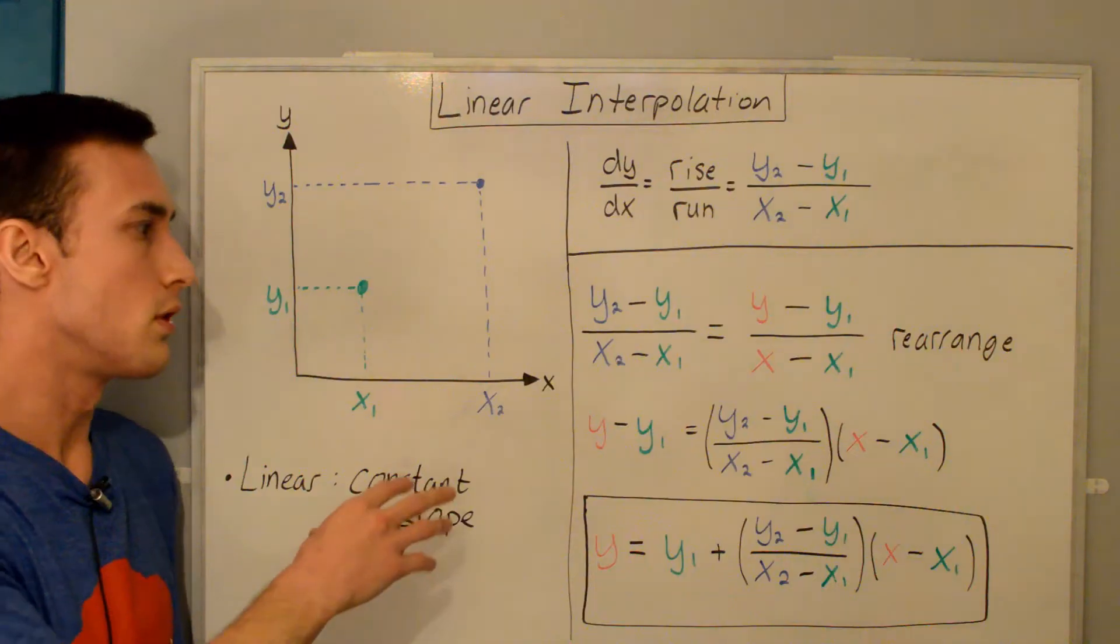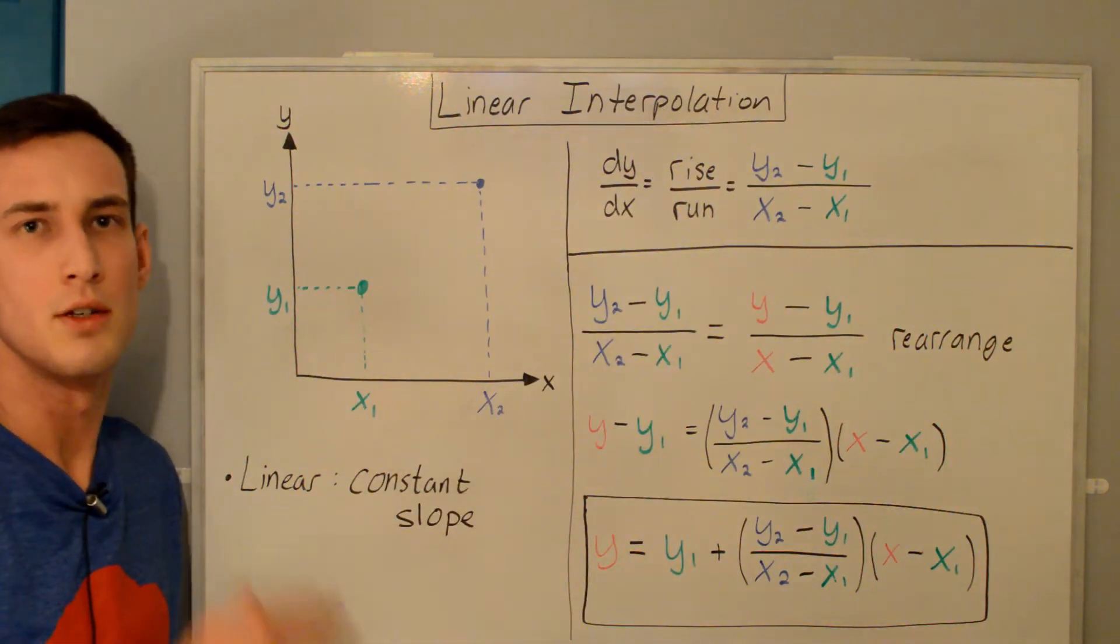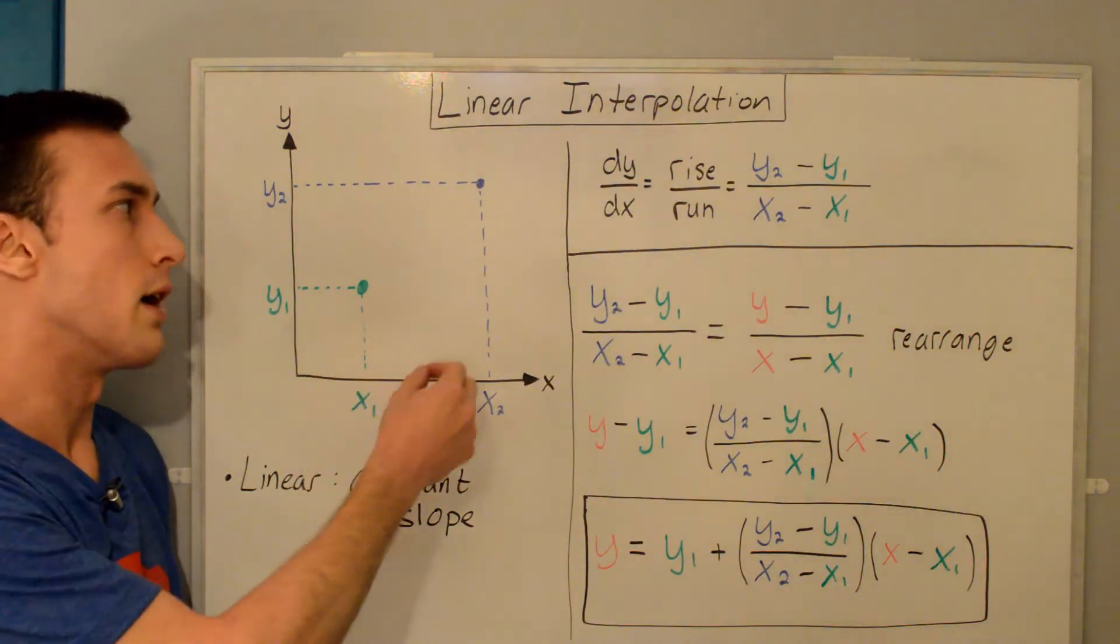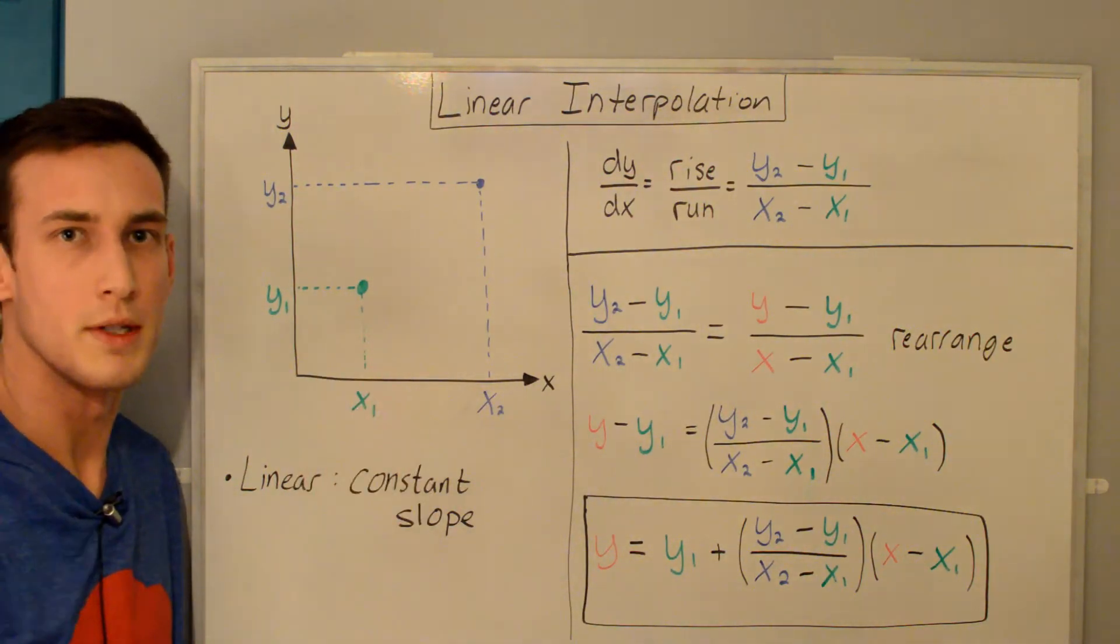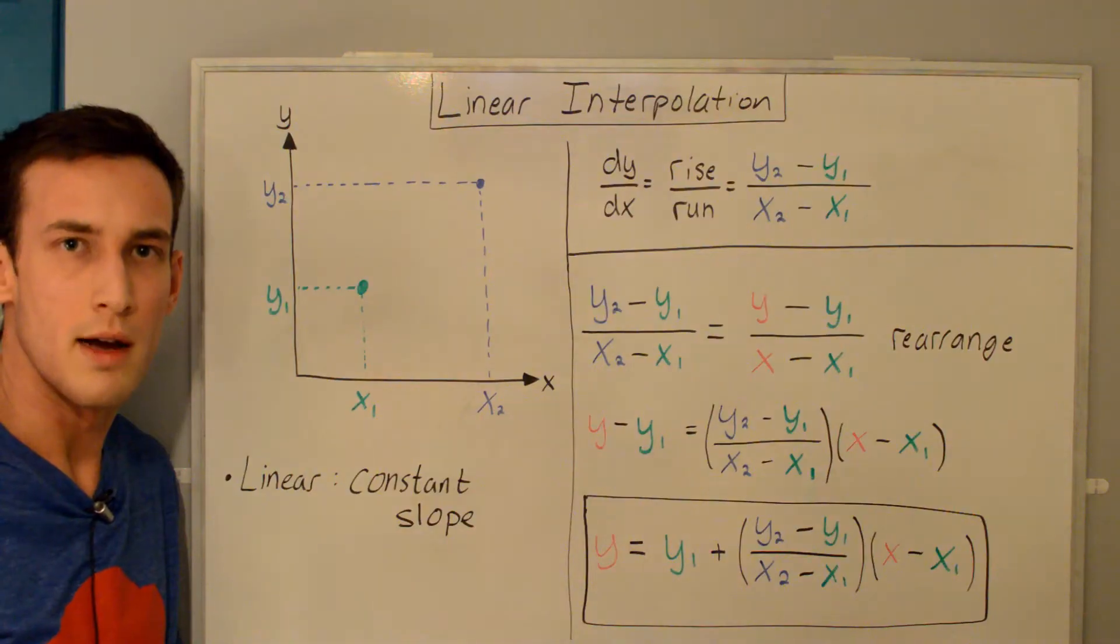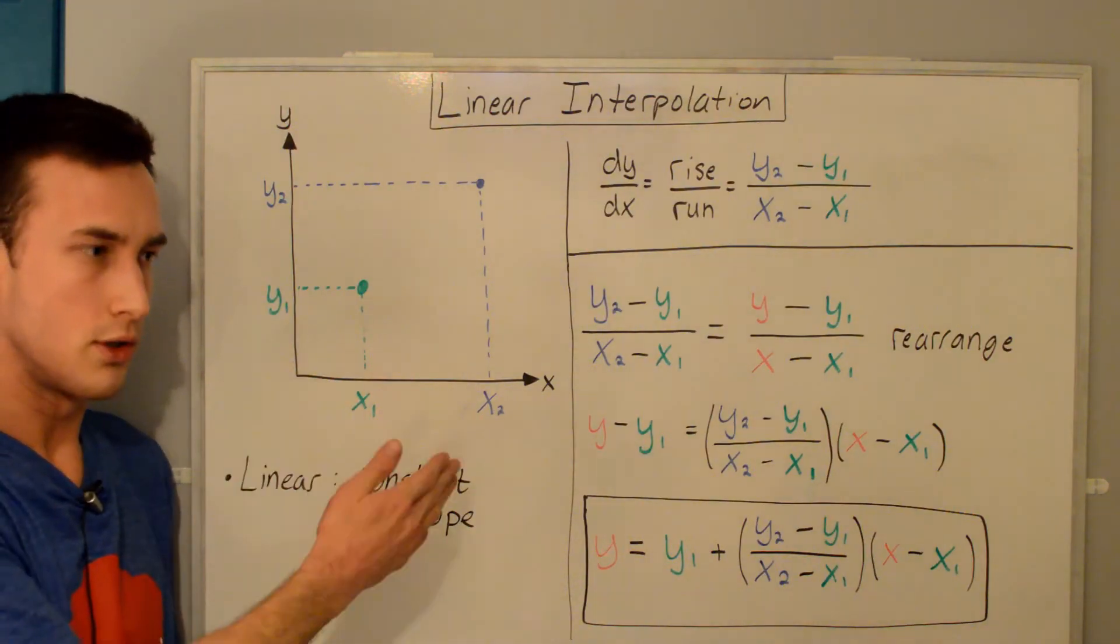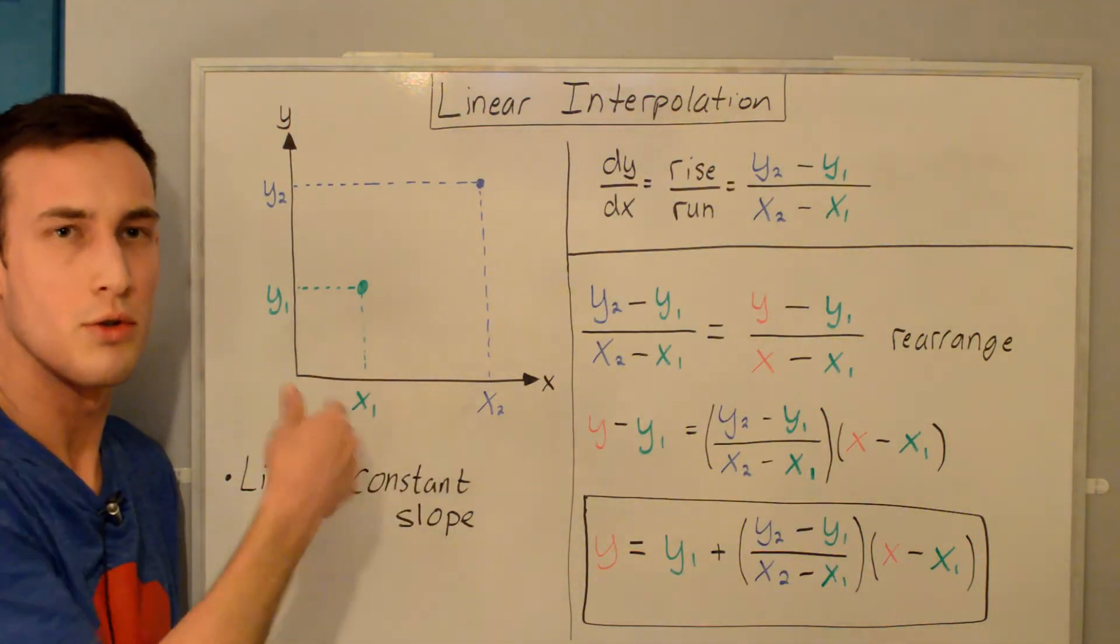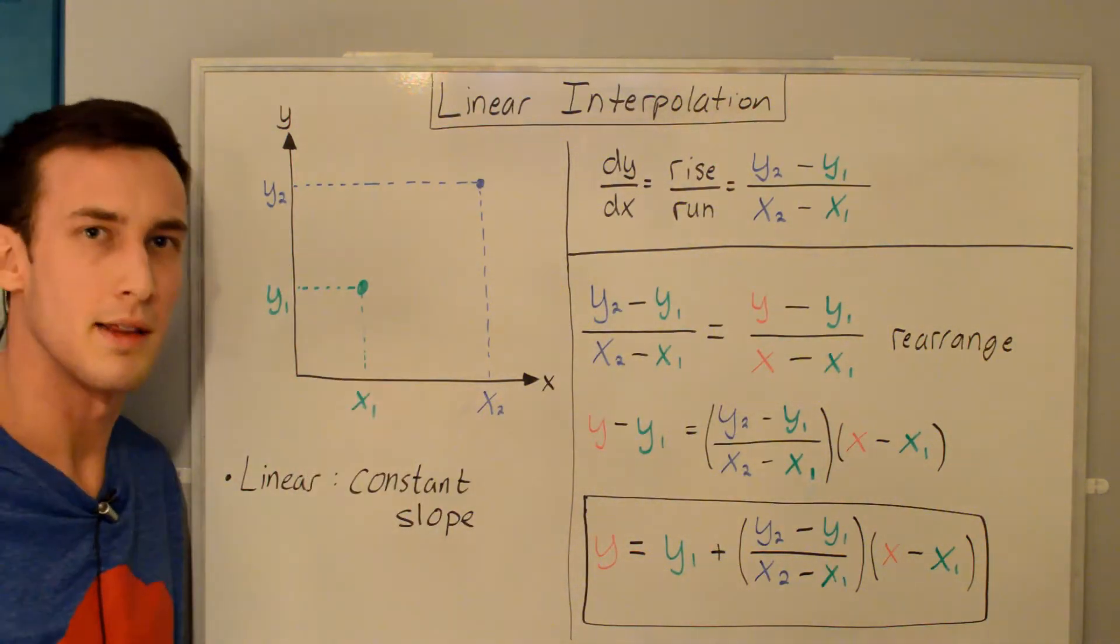This is a useful equation to use when you have values of data at discrete data points and you'd like to interpolate between the two to get a value at an unknown point where the data wasn't taken. For instance, if you have properties at certain temperatures and you want to get the property at a temperature that you didn't actually measure or there's not data for, you can linear interpolate to get that temperature.